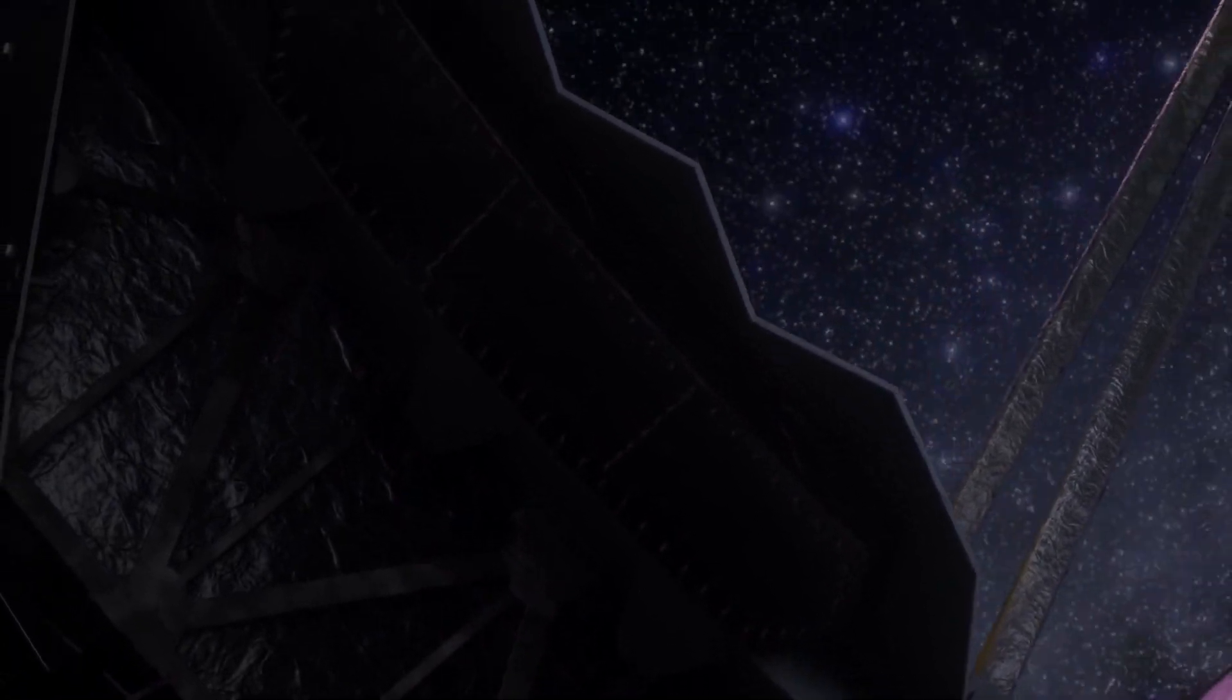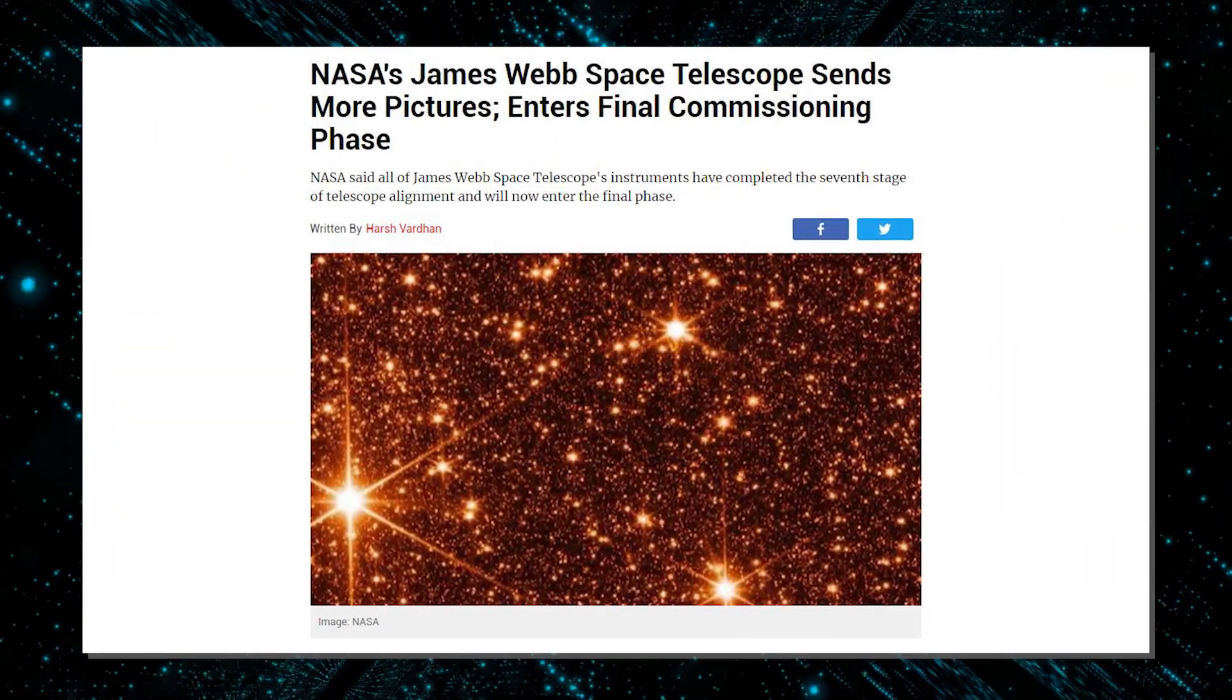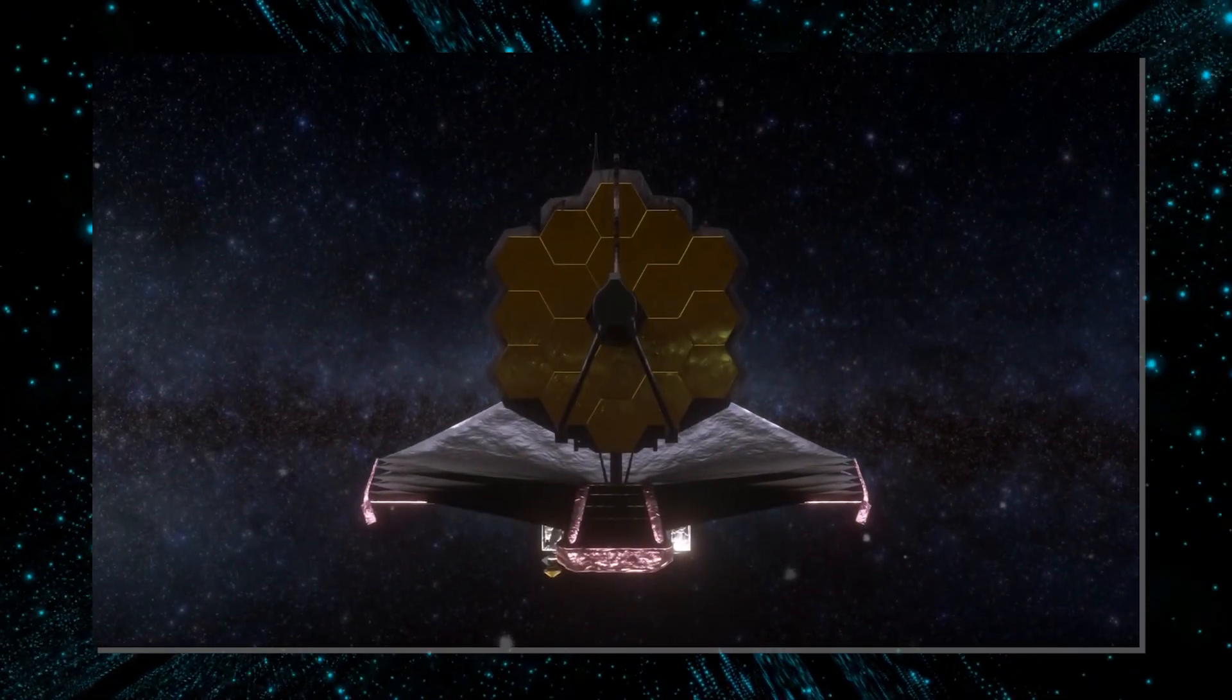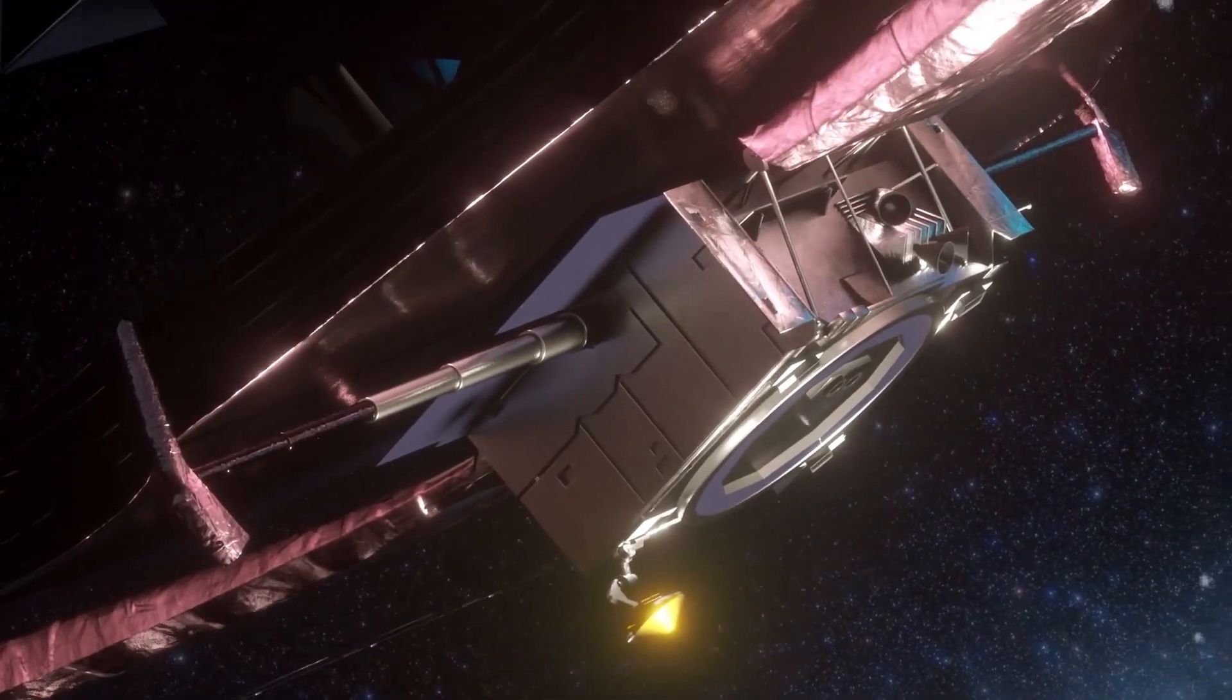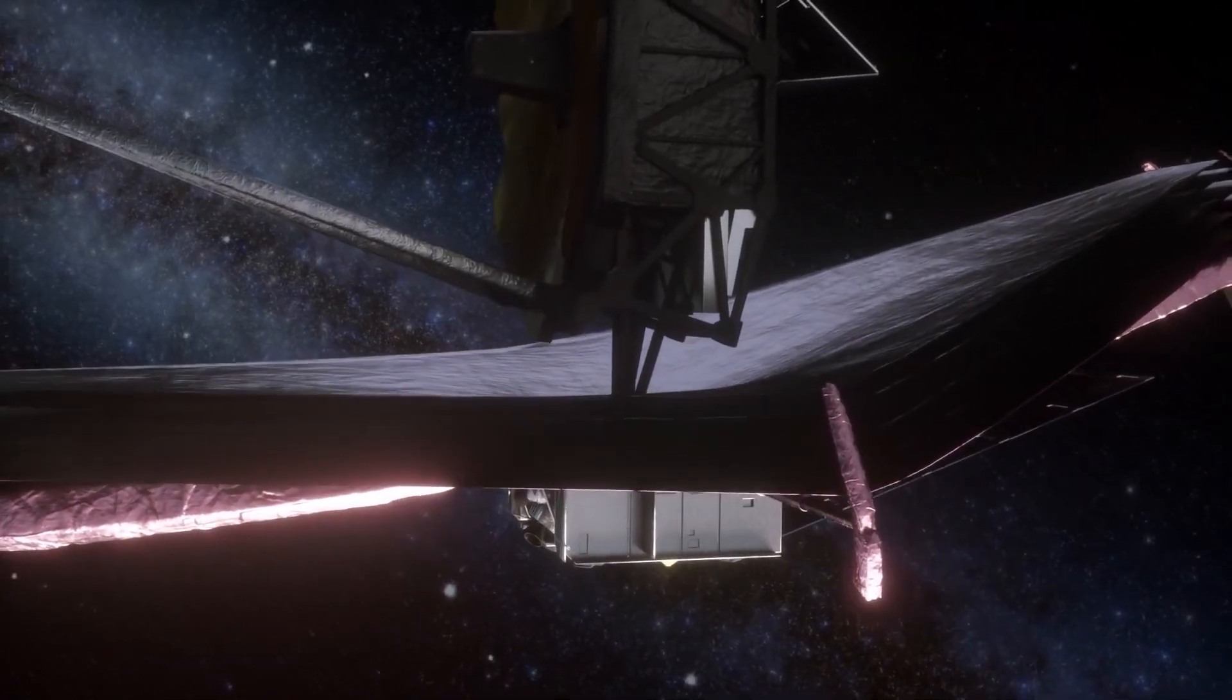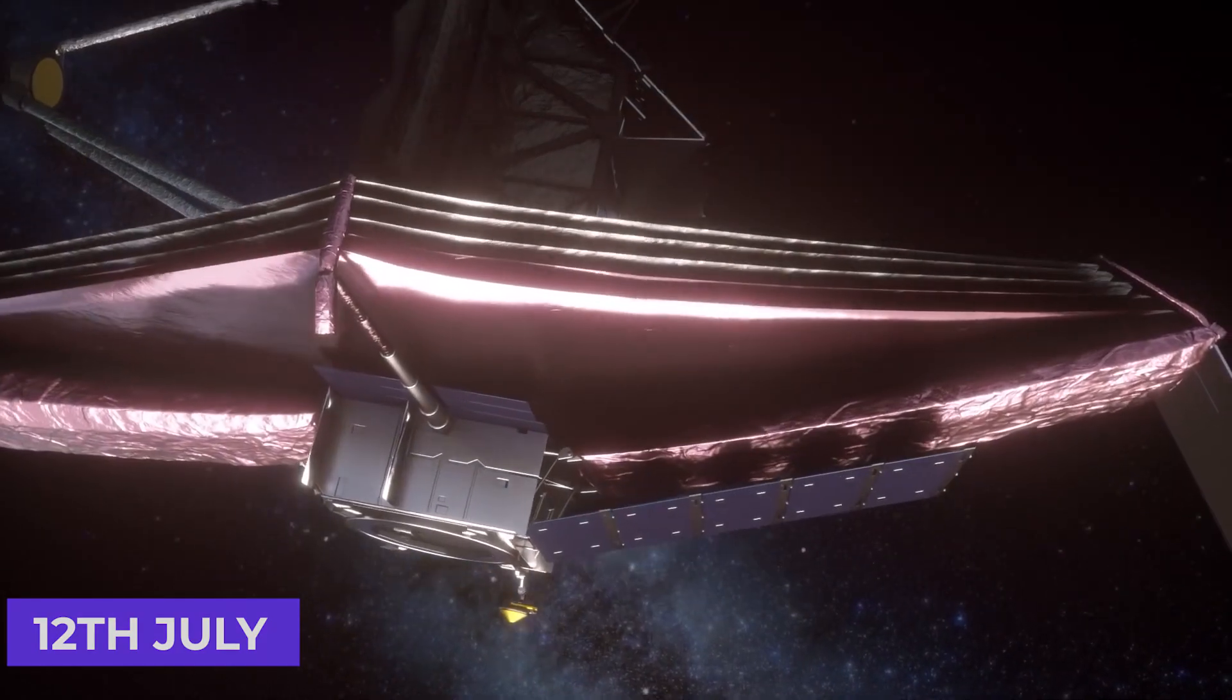The James Webb Space Telescope is now in its last phase of commissioning, where it will calibrate all four of its scientific instruments and the fine guidance sensor. After extensive calibrations and characterizations of the instruments, the JWST will start its routine science mission from the 12th of July.